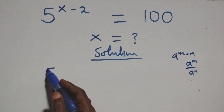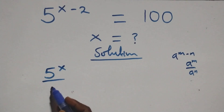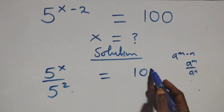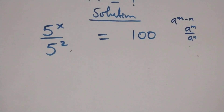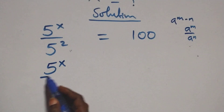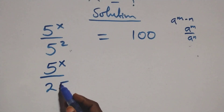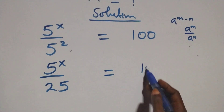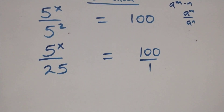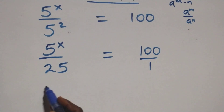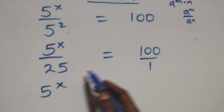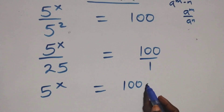Here we have 5 raised to power x over 5 squared equals 100. We can write 5 squared as 5 times 5, that's 25. So we have 5 raised to power x over 25 equals 100 over 1. Cross-multiplying, 5 raised to power x times 1 equals 100 times 25.